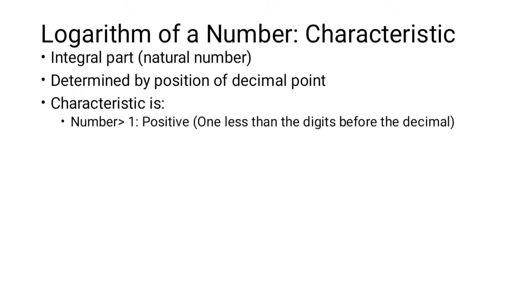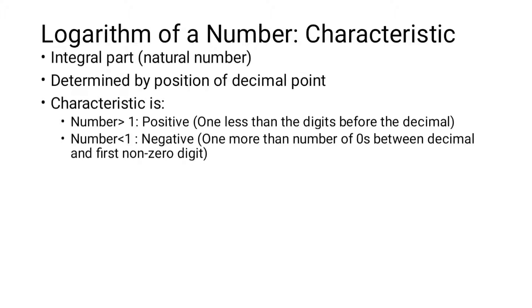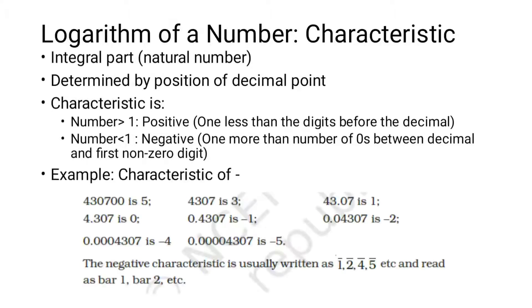The characteristic of a number greater than one is positive. In that case, we subtract one from the number of digits before the decimal point. If the number is less than one, the characteristic is negative, and it is one more than the number of zeros between the decimal point and the first non-zero digit.